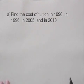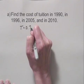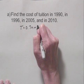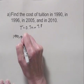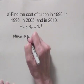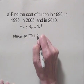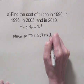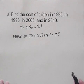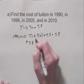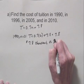Let's consider 1990 first. Our equation is T equals 0.7N plus 7.8. In 1990, N is equal to zero, since N is the number of years since 1990. So we substitute zero for N, giving T equal to 7.8. That tells us the tuition was $7,800.